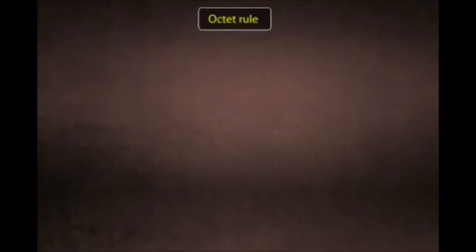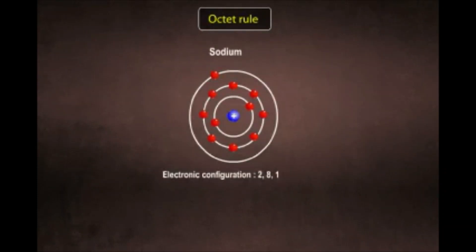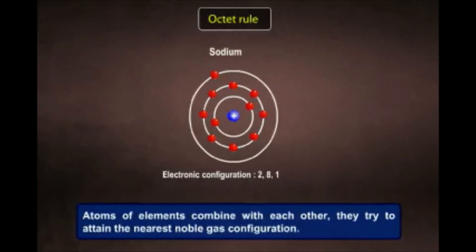You know what the octet rule is. Everyone loves stability, and elements are no different. Look at the electronic configuration of sodium. When atoms of elements combine with each other, they try to attain the nearest noble gas configuration, because noble gases are very stable.